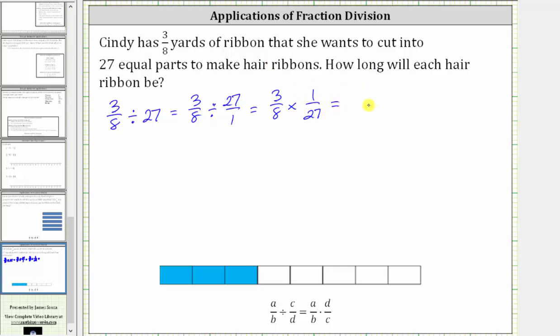Now we multiply. In the numerator, we have 3 times 1. In the denominator, we have 8 times 27. Before determining these products, we will now simplify out all the common factors other than one between the numerator and denominator.